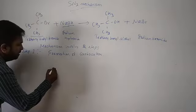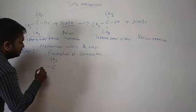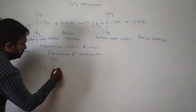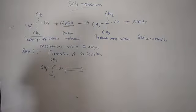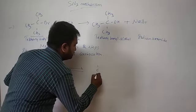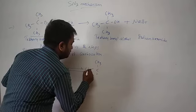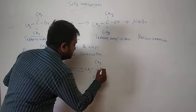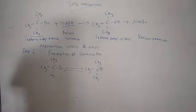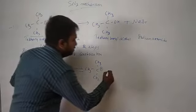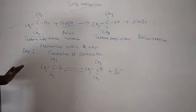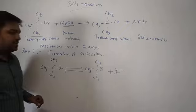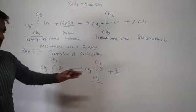In step one, tertiary butyl bromide ionizes itself to form a carbocation and a bromide ion. This ionization — the breaking of the C–Br bond — leads to the formation of the tertiary butyl carbocation.